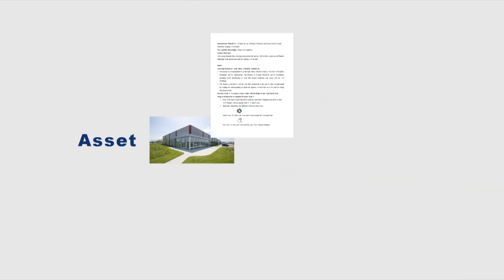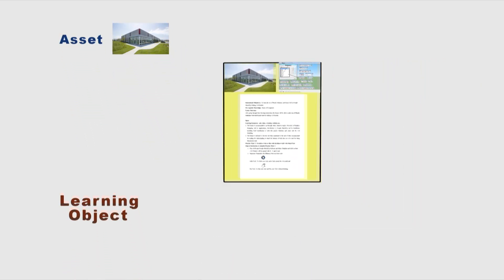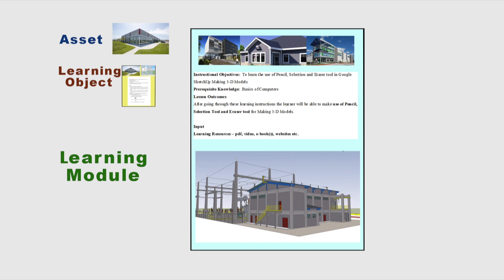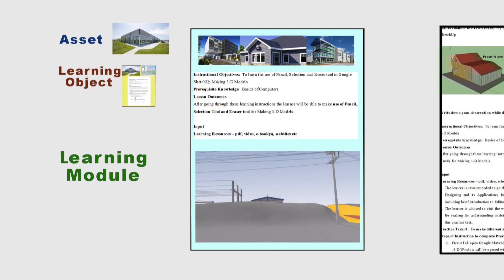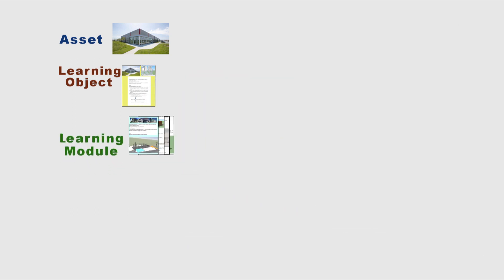The smallest part in an e-content element is known as an asset. An asset can be a single image, text, graphics, or an animation. The next part is a learning object, which is the combination of assets in a pedagogical manner. A learning module is the combination of many learning objects, consisting of self-test questions as well as assignments. When learning modules are combined in a pedagogical framework, it is known as a learning unit.